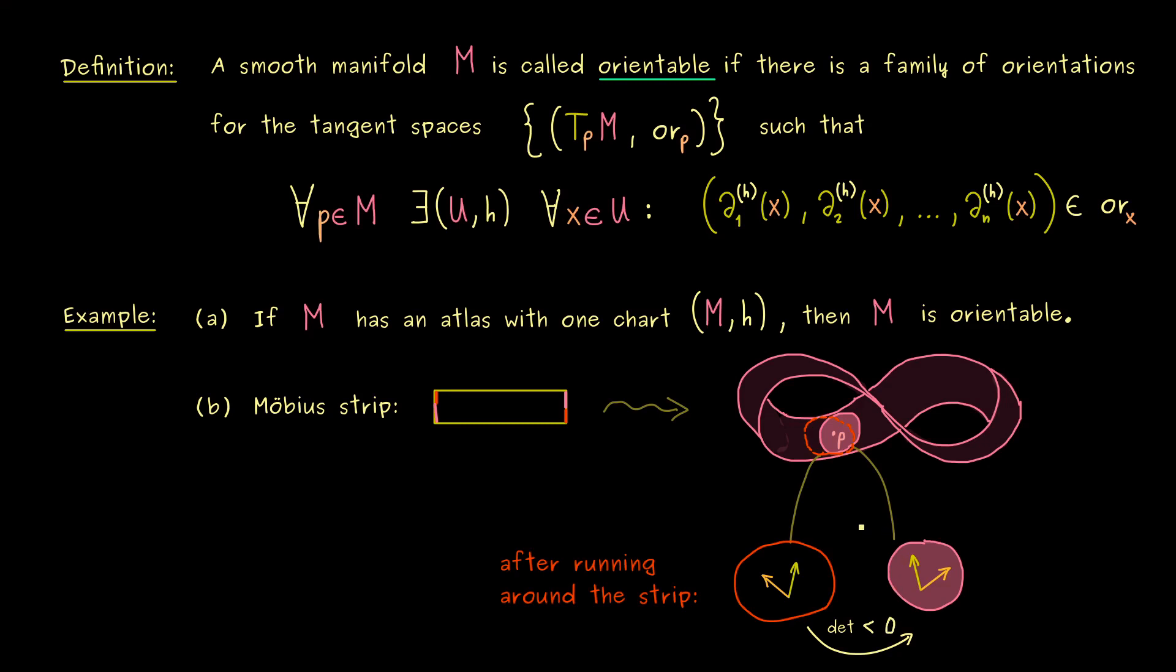Of course, this is not yet a mathematical proof that the Möbius strip is not orientable, but we will do that in later videos. Indeed, we will have more powerful tools to do this proof. At the moment I would say, it's just important that you know that orientable is a very nice property that the Möbius strip does not fulfill.